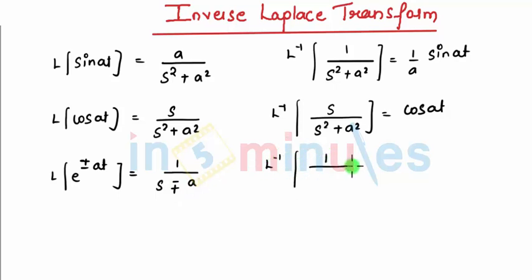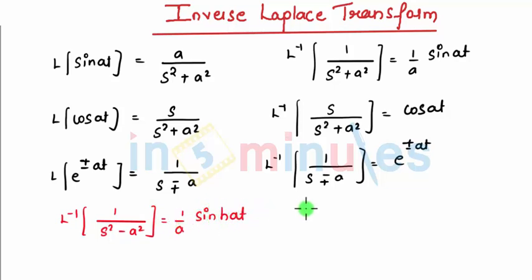Next, I will be writing directly Laplace inverse of 1 upon s square minus a square, that is equal to 1 by a sinh(at). In the same way, L inverse of s upon s square minus a square, that is equal to cosh(at).